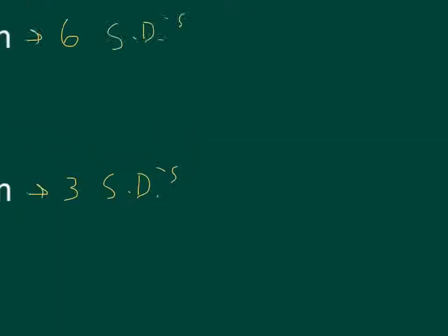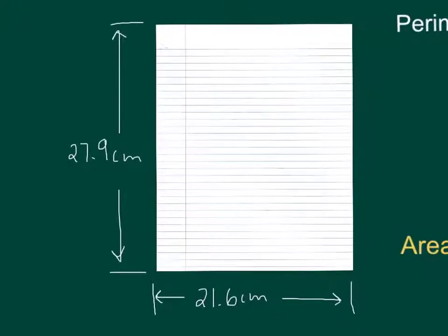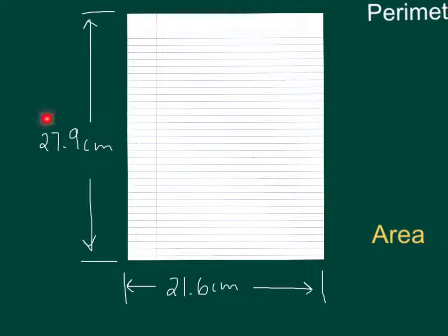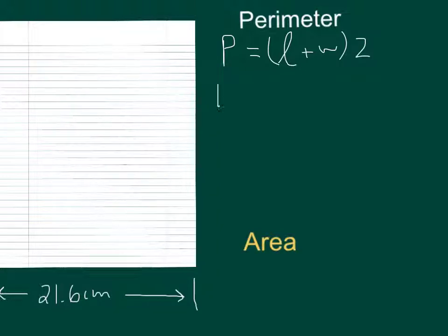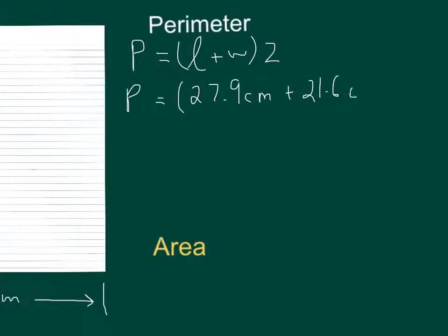Now let's apply sig digs to an actual question. We have a sheet of paper with a length of 27.9 centimeters and a width of 21.6 centimeters, and we want to calculate the perimeter and area. For perimeter: it's length plus width doubled, so we put in 27.9 cm and 21.6 cm and double it. The calculator gives us 99-point-something.